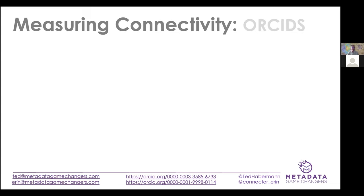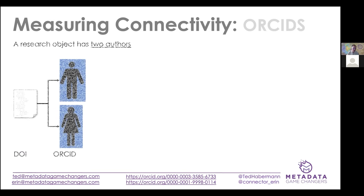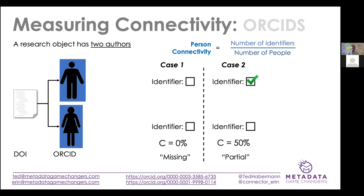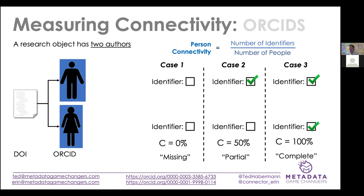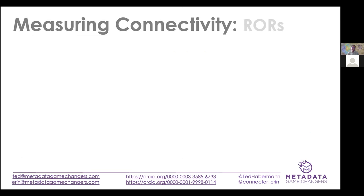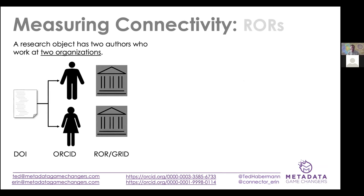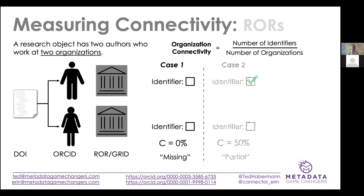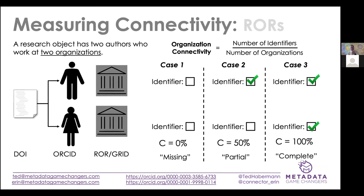Two examples. First, ORCIDs: if we have a DOI for a dataset or journal paper with two authors, what I call connectivity is the number of identifiers divided by the number of people. If there are no identifiers, connectivity is zero — 'missing.' If there's one, connectivity is 50% — 'partial.' If we have identifiers for all authors, connectivity is complete or 100%. The same thing can be done with RORs for organizations: the number of identifiers over the number of organizations is connectivity, and it can likewise be missing, partial, or complete.